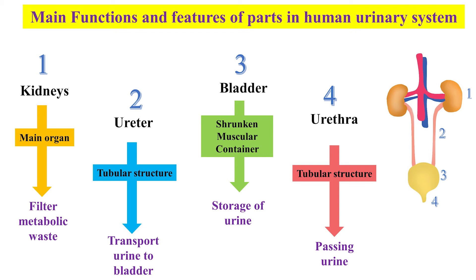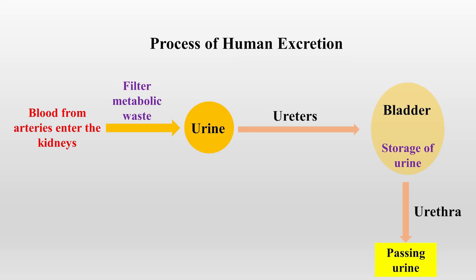Kidneys are the main organs of the human urinary system and they filter metabolic waste. There are two ureters, which are tubular structures that transport urine into the bladder. The bladder is a muscular container that distends as it fills with urine and functions to store urine. The urethra is also a tubular structure that helps in passing urine. Blood from the arteries enters kidneys where metabolic waste is filtered, urine is made and transported by ureters to the bladder, and when passing urine, it flows through the urethra.